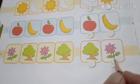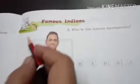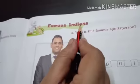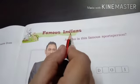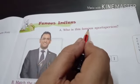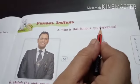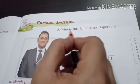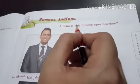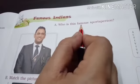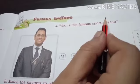Okay next — Famous Indians. Famous means popular. Who is this famous sport person? Baccho, famous sport person ko hum jaante hain. Famous means popular, sport persons means jo person sport khelta hai — like cricket, badminton, etc.